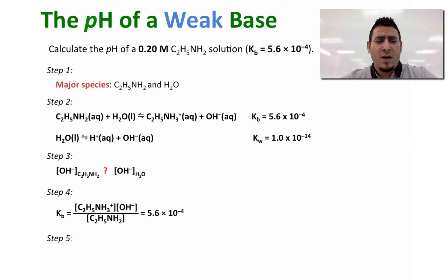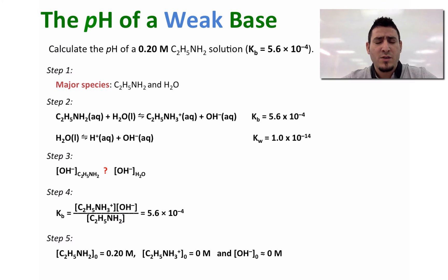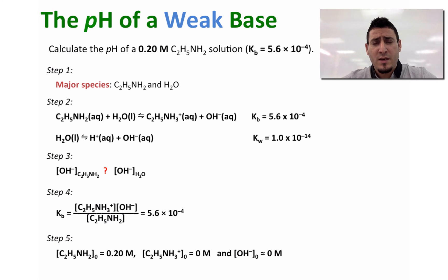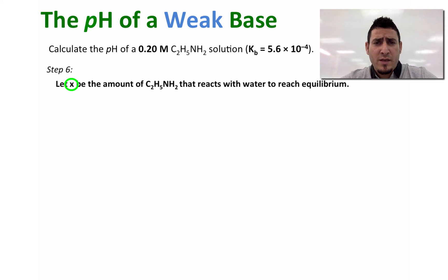In step five, we write the initial concentrations of the ions or compounds present in the solution. The initial concentration of the base is equal to 0.20 molar, and we have 0 molar for the conjugate acid and 0 molar for the OH⁻, since we are neglecting the OH⁻ produced by the autoionization of water. In step six, we let X be the amount of the base that will react with water to reach equilibrium.